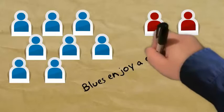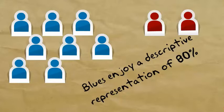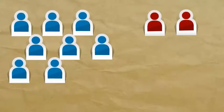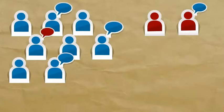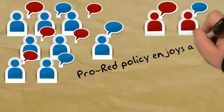In what they promote in terms of ideas as laws. Now imagine we have eight blues and two reds in a Congress. Here, blues would enjoy a descriptive representation of 80% — eight out of ten. But imagine that in this hypothetical instance, the two reds and eight blues held different kinds of ideas: pro-red policy and pro-blue policy. Here, pro-red policy enjoys a substantive representation of 60%.